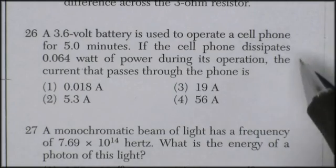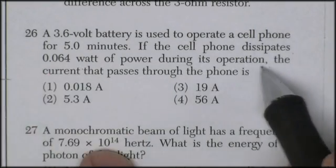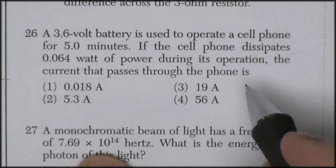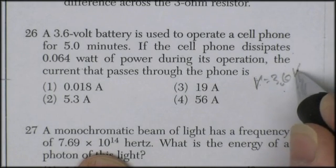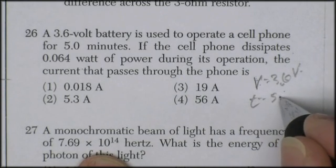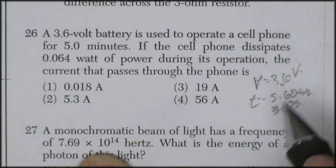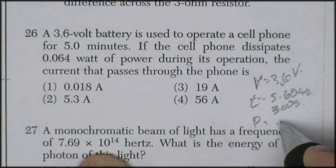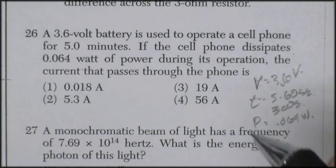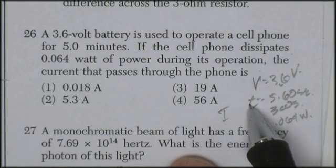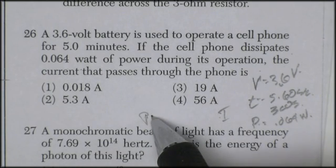Question 26. A 3.6 volt battery is used to operate a cell phone for five minutes. The cell phone dissipates 0.064 watts of power during its operation. The current that passed through the phone is. Alright, we've got 3.6 volts. We've got time, that's going to be 5 times 60 seconds, so 300 seconds. And we've got power in watts, 0.064 watts. And what do we want? The current. I'm going to look at this. I don't think I need time. If power equals voltage times current, P equals VI, then I is equal to P divided by V.